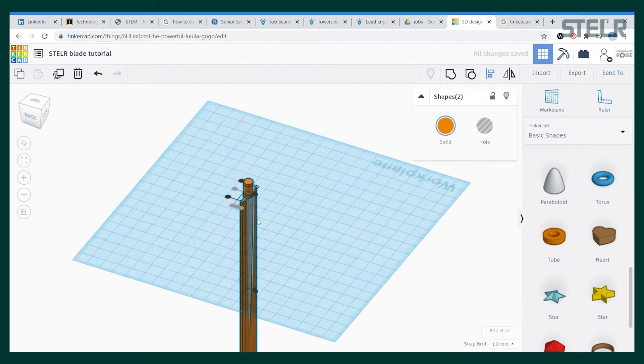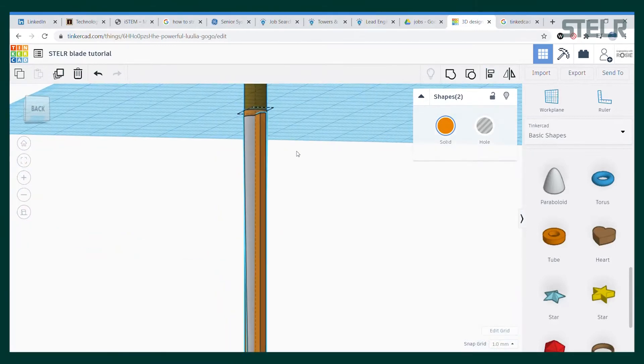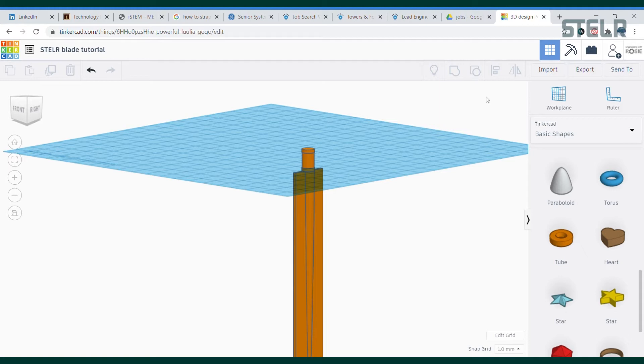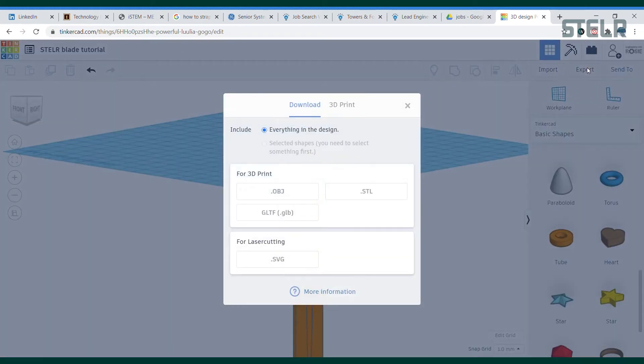So that is the basic blade design complete. You can definitely feel free to leave it here if you like or you can export the shape to either 3D print or laser cut it. If you want to keep going to add a few more design details then keep watching.